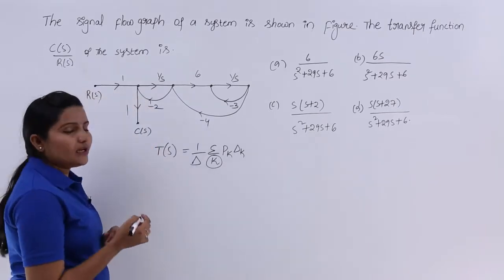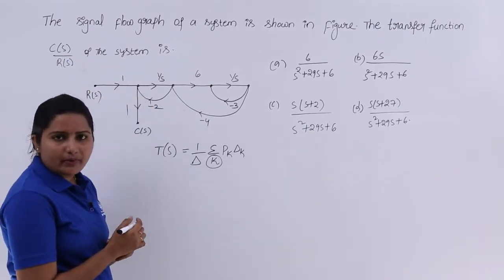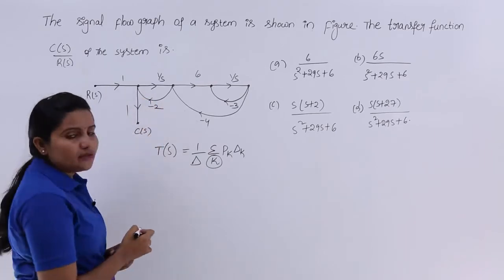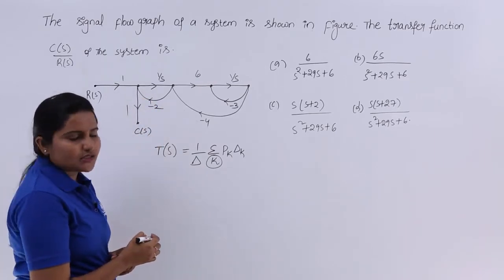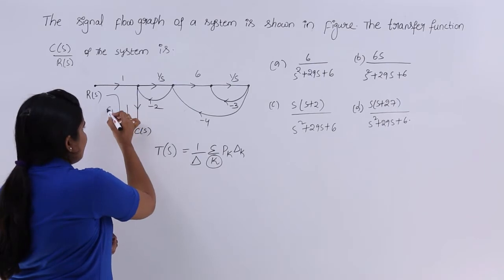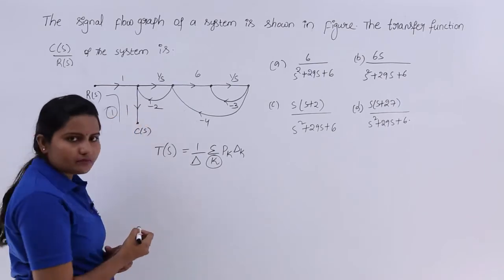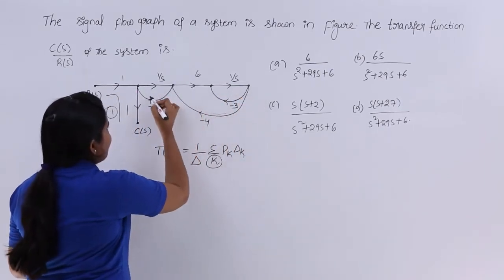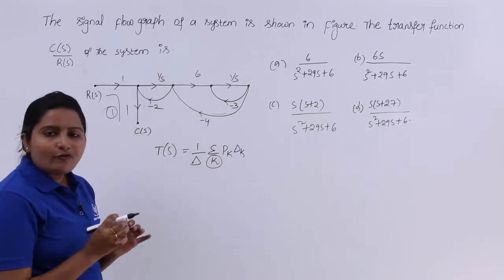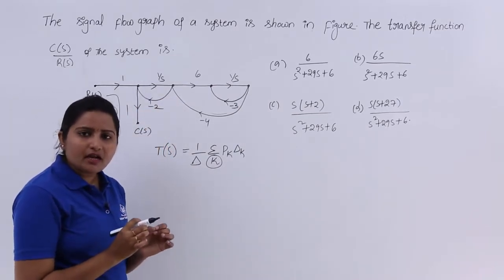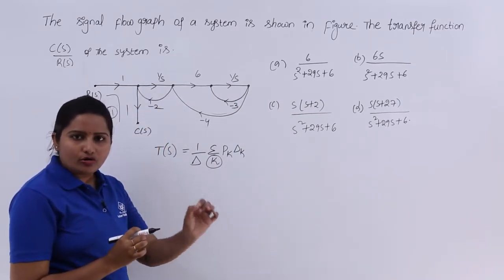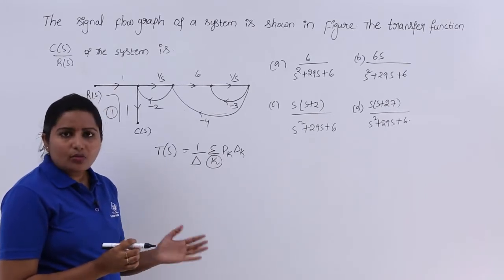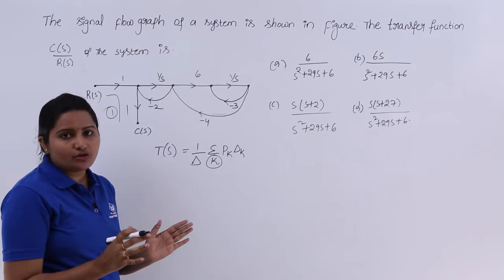So let's count how many forward paths are there. Here you are having a shortest forward path from R(s) to C(s) — this is one path. The forward path is the path from input to output without touching a node more than once.